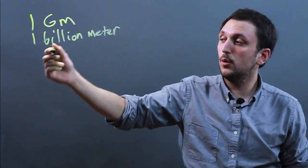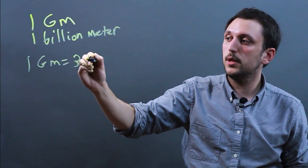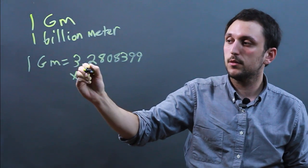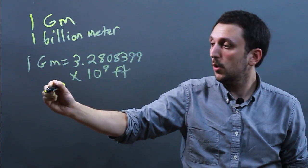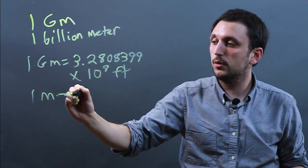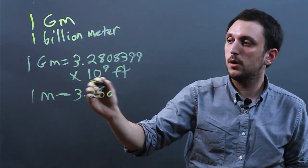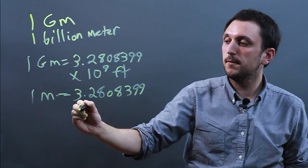One gigameter equals 3.2808399 times 10 to the ninth feet, because one meter equals 3.2808399 feet.